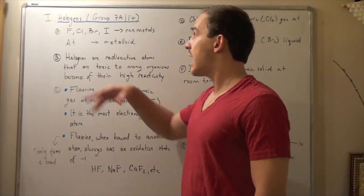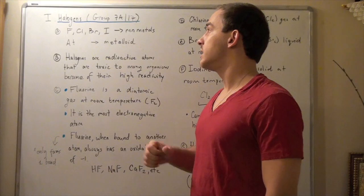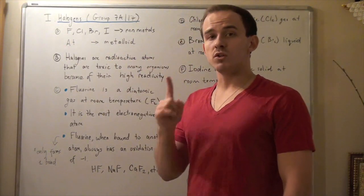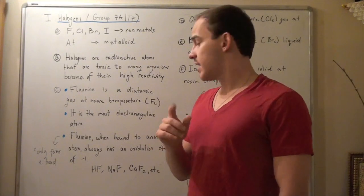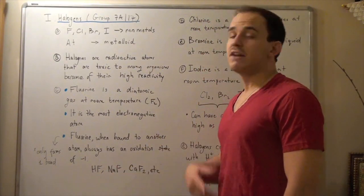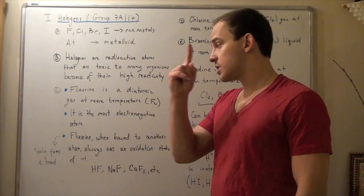We'll see that chlorine, bromine, and iodine forms more than one bond, but know that fluorine, the most electronegative atom, forms only one bond, and its oxidation state is negative one. For example, it forms bonds with H, it forms bonds with Na and Ca, but it only forms one bond.